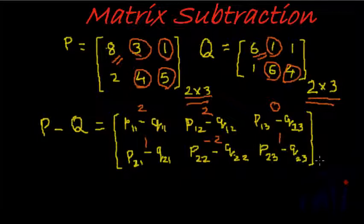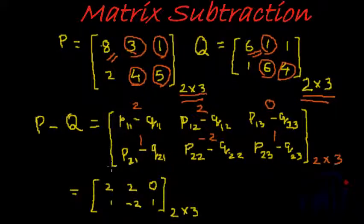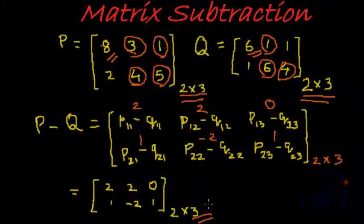If we put all of them in a matrix we get the answer. The final answer is 2, 2, 0, 1, minus 2, 1, which is again a 2 by 3 matrix. This is the right way to check whether we got the right thing.